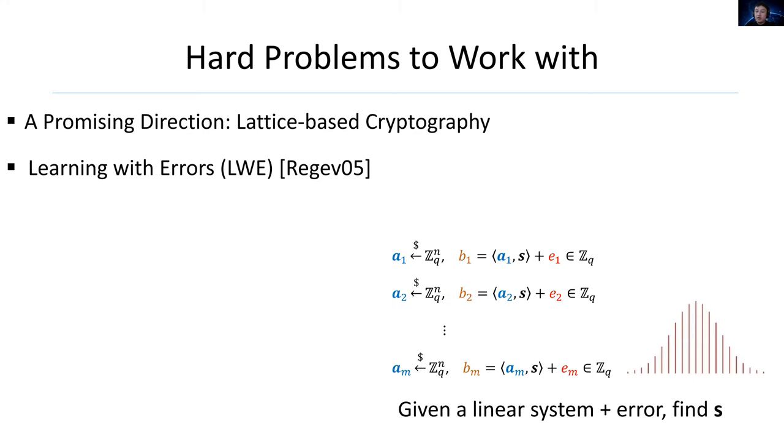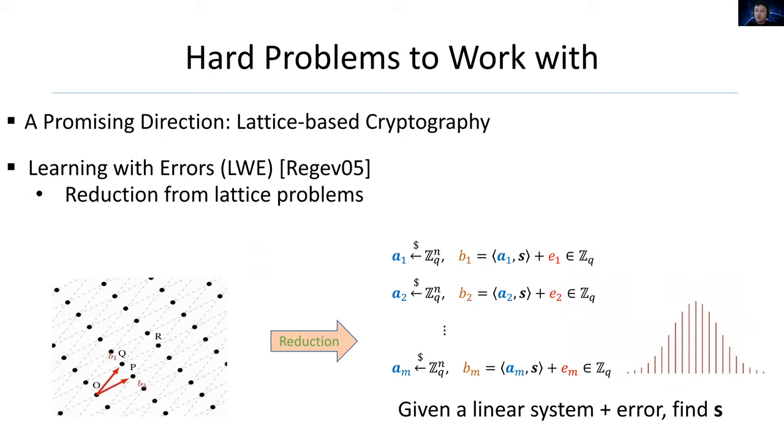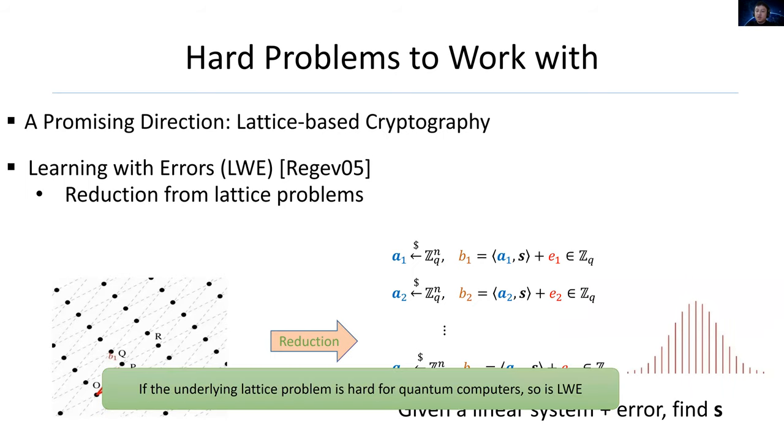In 2005, Regev proposed a hard problem called Learning with Errors. Simply speaking, LWE aims to find the secret from many noisy inner products of random vector A and secret, or determine the pair (A,B) from random pairs. The noise is distributed as discrete Gaussian. Since it was proposed, LWE draws wide attention because there is a reduction from basic lattice problems to LWE.